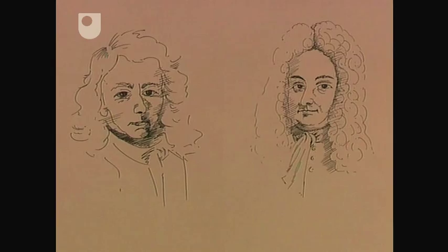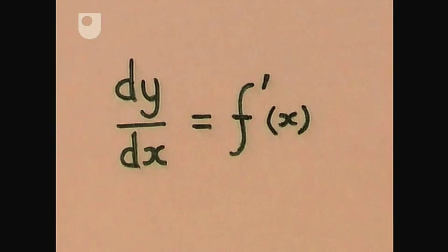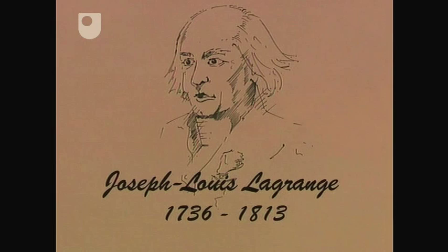And by then, long after the deaths of Newton and Leibniz, yet another notation had been developed, back where our story began, in France. By the early 19th century, a new notation was introduced by Lagrange in Paris, which was again the centre of the mathematical universe.